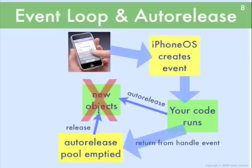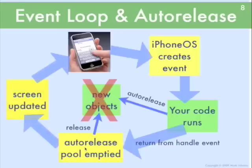When release gets called on that object, if it causes the retain count to go to zero, those objects get deleted. This mechanism is a way that temporary objects — created just in the handling of this event — get created by your code without your code having to clean them up itself. It auto-releases them, so that as we go around the event loop and your code has finished processing that particular event, those temporary objects can get released. After the auto-release pool is emptied, that's when the screen gets updated and we go back around the event loop again.